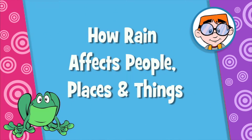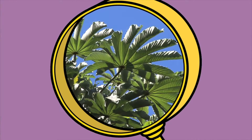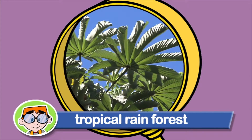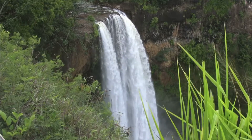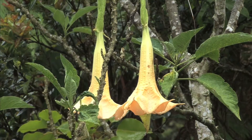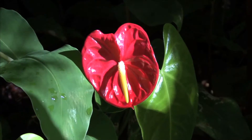How rain affects people, places, and things. Rain, or the lack of rain, can really affect the land, plants, people, and animals too. A place that gets lots of rain is a tropical rainforest. Because of the rain and an abundance of water, it makes the rainforest a great place to live for lots of animals and plants. Rainforests are home to very strange and exotic plants and animals, both large and small.